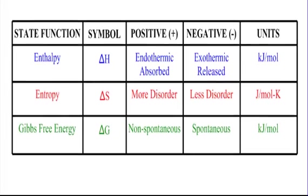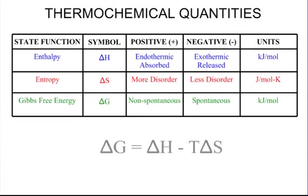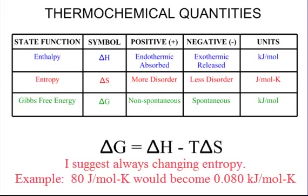All three of these quantities — enthalpy, entropy, and Gibbs free energy — come together in one simple formula: delta G equals delta H minus T, which is temperature in Kelvin, times delta S. Take a look at this formula: we're subtracting, so in a subtraction or addition problem, all of our units must be the same. If you're doing enthalpy in kilojoules and entropy in joules, you're going to have to convert everything to kilojoules or everything to joules. Keep that in mind when doing these problems.